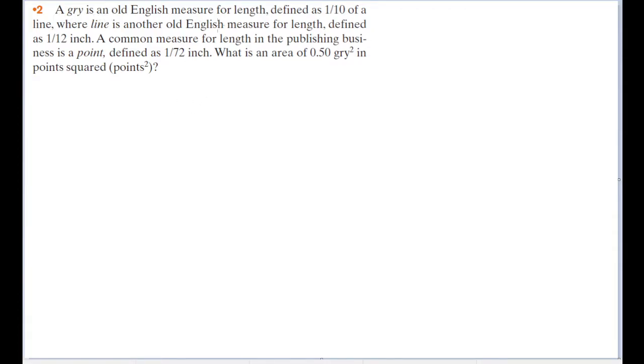A gris is an Old English measure for length, defined as a tenth of a line, where line is another Old English measure for length, defined as a twelfth of an inch. A common measure for length in the publishing business is a point, defined as a seventy-second of an inch. What is an area of 0.50 gris squared in points squared?